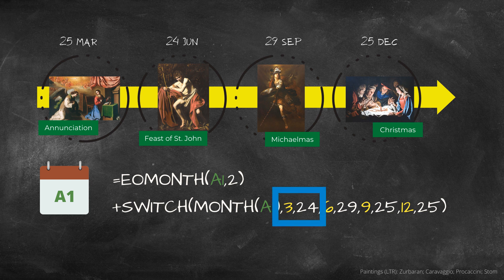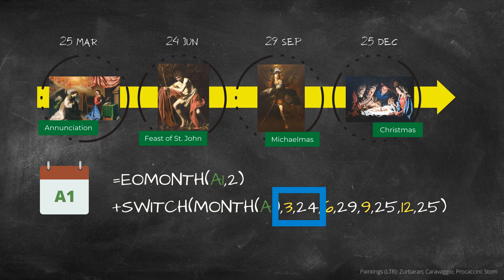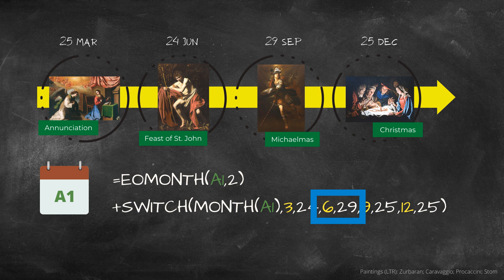You can program this into your SWITCH function by typing comma three, comma 24. If the month of the previous date is six, you need the September quarter day, and so the number of days you need is 29. So type comma six, comma 29.